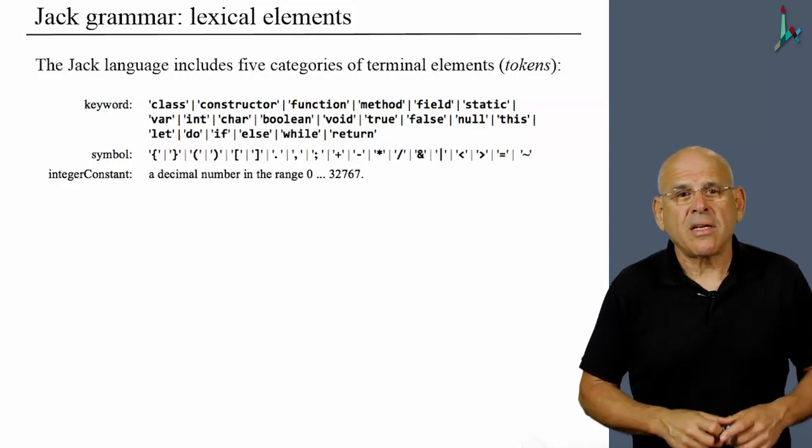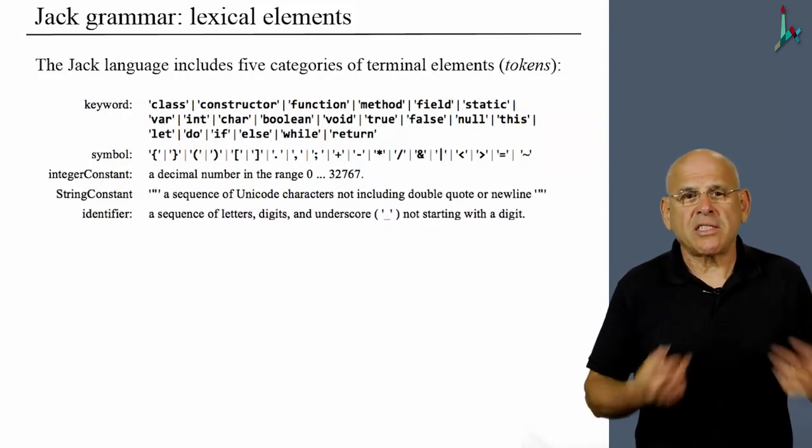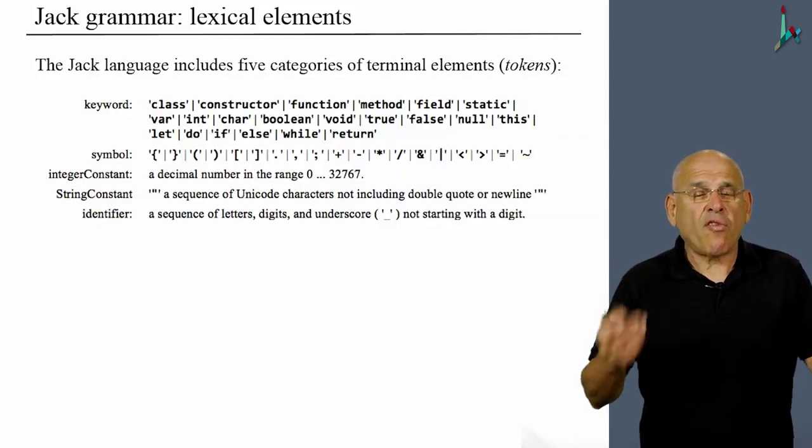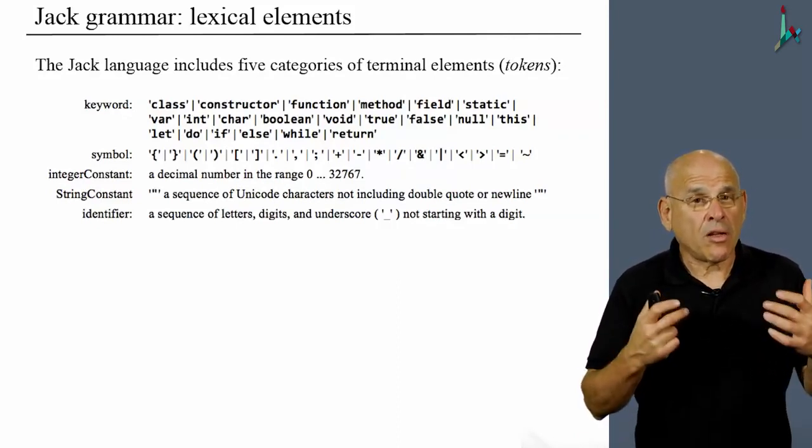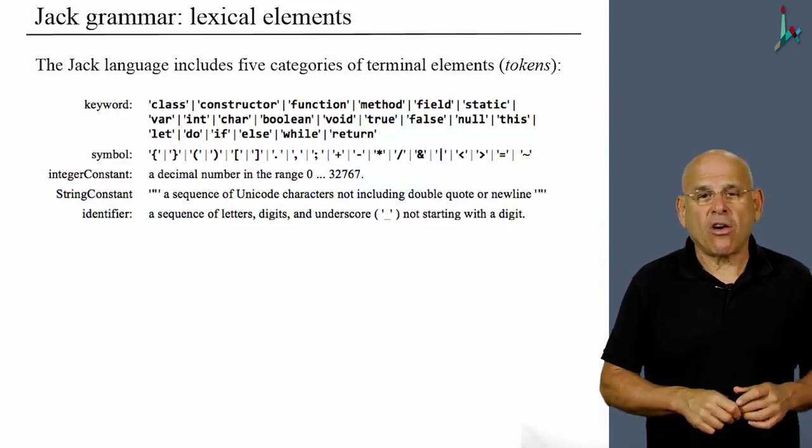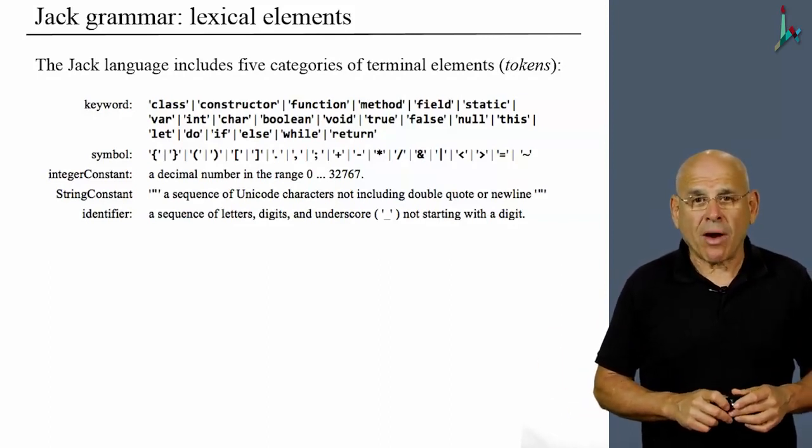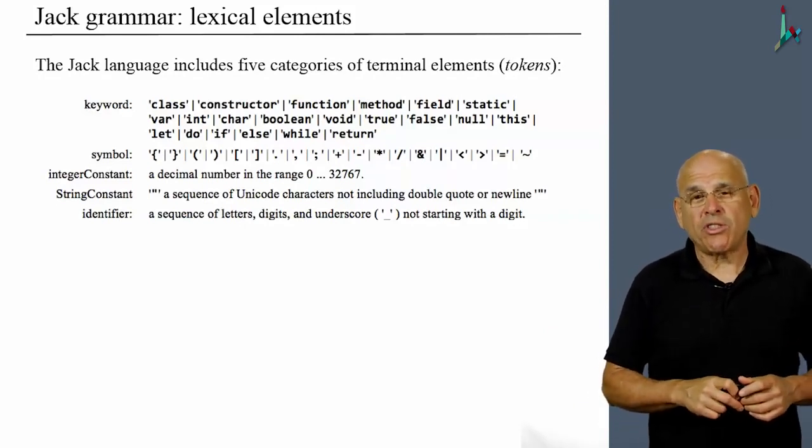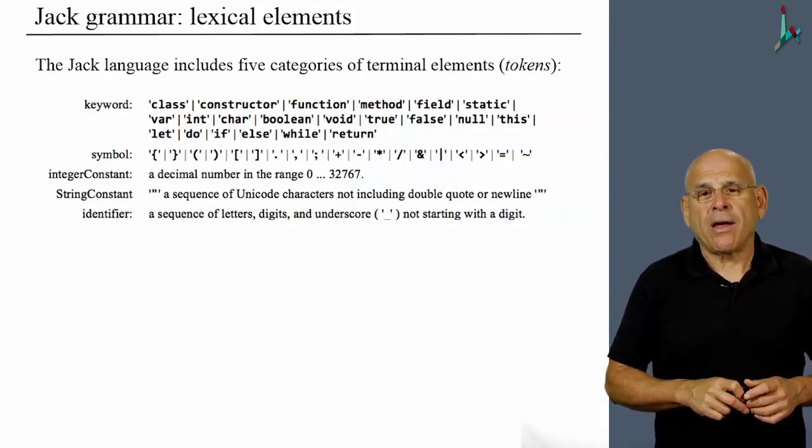We have symbols, integer constants, string constants, and identifiers. And these four terminal rules describe all the lexical elements that can go into Jack programs. These are the atoms or the tokens from which Jack programs consist.